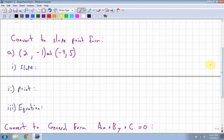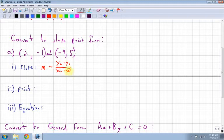Okay, so for this equation here, convert to slope point form. First thing I need is my slope, which is m, and that's equal to my rise over my run, which is y₂ minus y₁ over x₂ minus x₁.